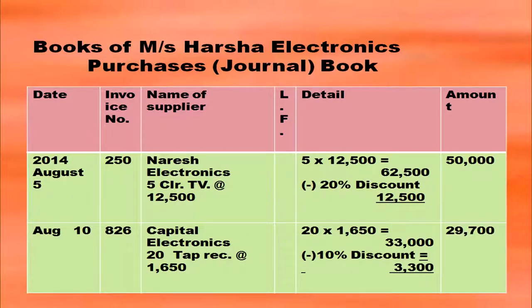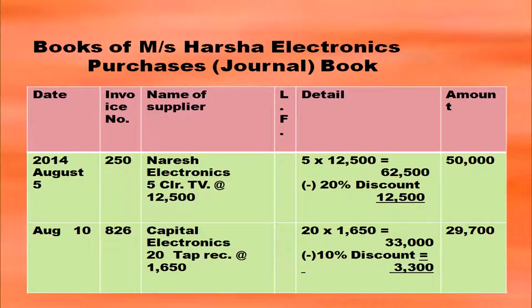Naresh Electronics is the name of the supplier. Harsha Electronics purchased 5 color TVs at rupees 12,500, which is also written in the name of the supplier column. Then the calculation is written in detail in the details column: 5 × 12,500 = 62,500. 62,500 × 20/100 = 12,500 trade discount. So 62,500 minus trade discount 12,500 gives 50,000, and that comes in the amount column.